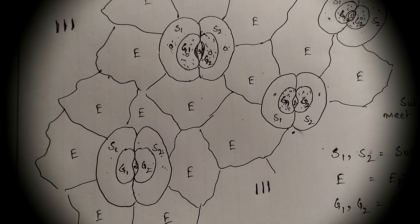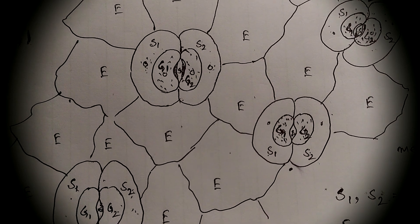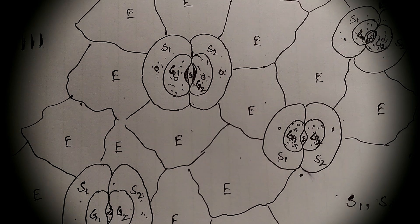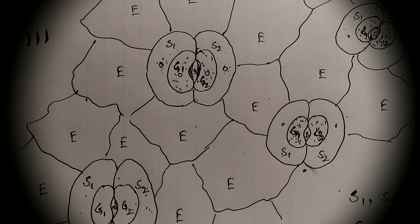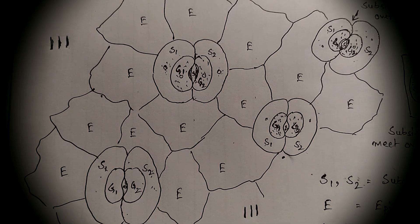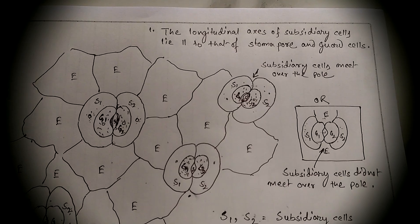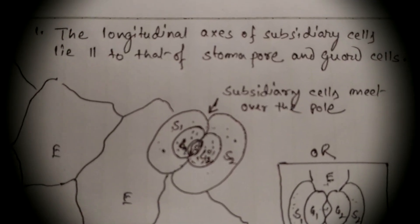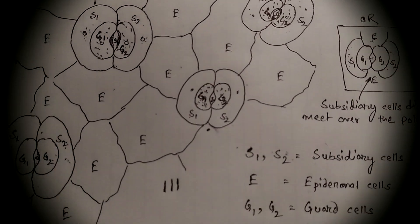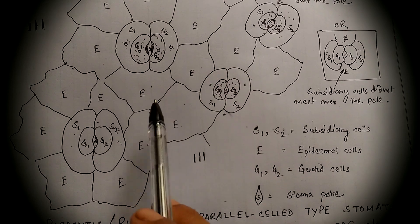Hence, we may say that the stomata are of parasitic type, or we may say parallel cell type. This is found in the family Rubiaceae, Convolvulaceae, and 103 other families — in total 105 families. We may conclude that the longitudinal axis of the subsidiary cells lies parallel to that of the stomatal pore and guard cells. This kind of arrangement is parallel, the stomata are parasitic, and the surrounding cells are the epidermal cells.